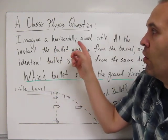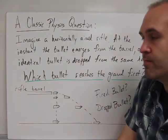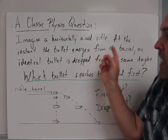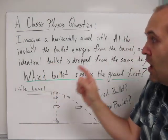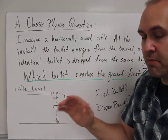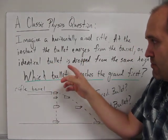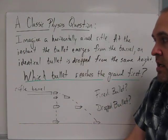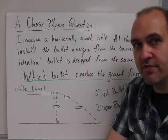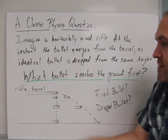Imagine that we have a horizontally aimed rifle. Maybe you're shooting targets. And at the instant the bullet emerges from the barrel, another identical bullet, same mass, same shape, is dropped from the same height that the bullet emerges from the barrel.